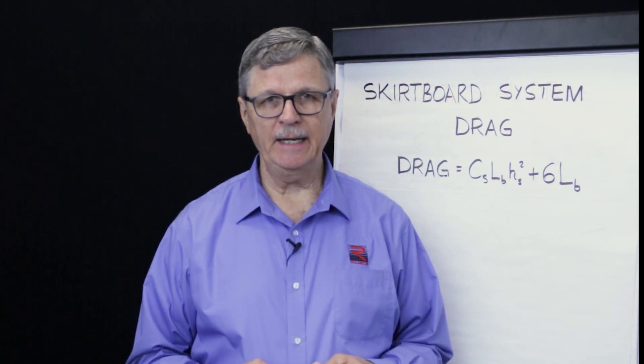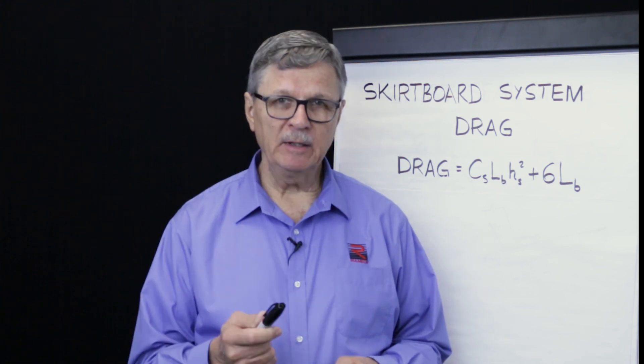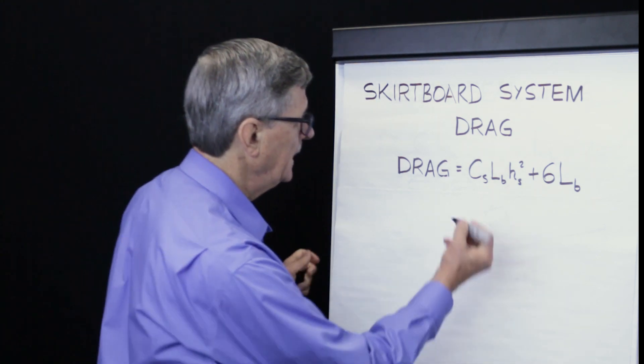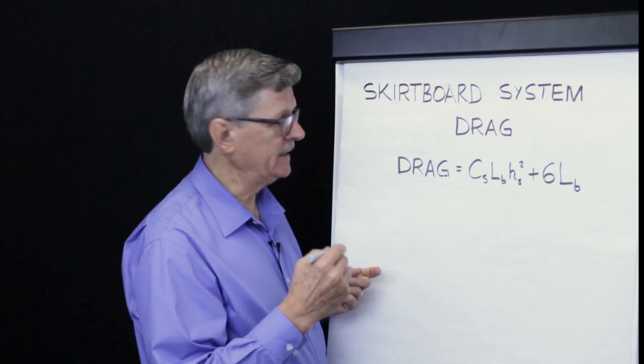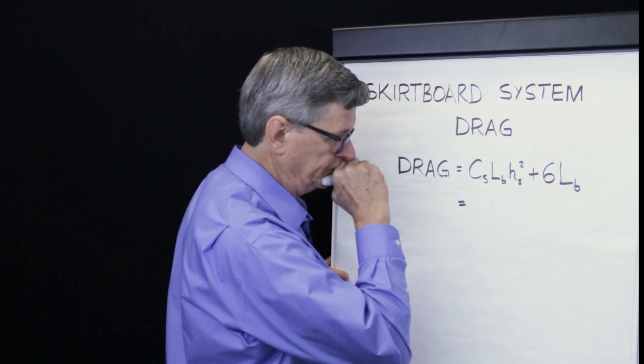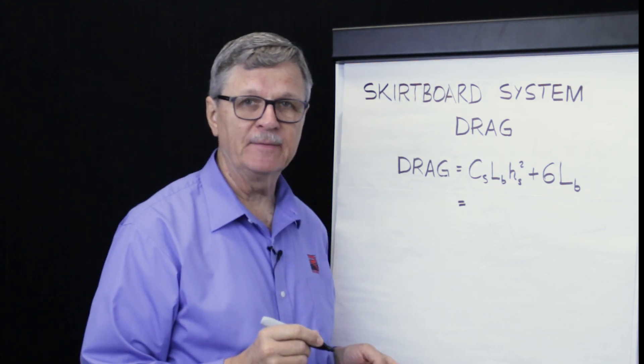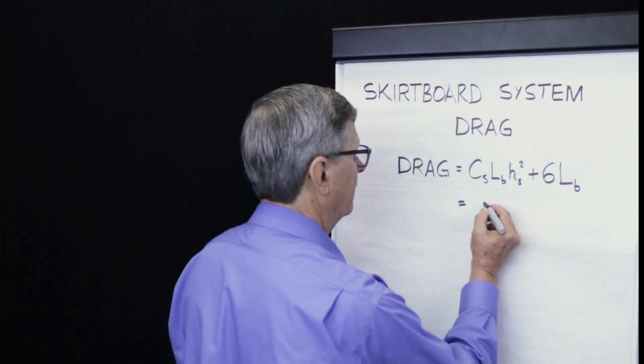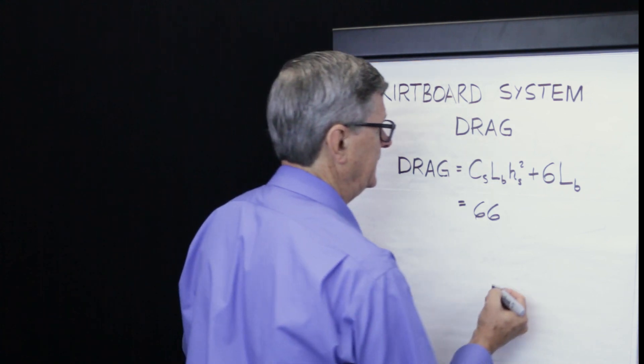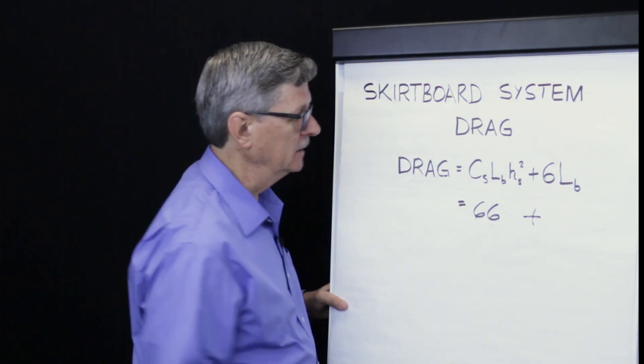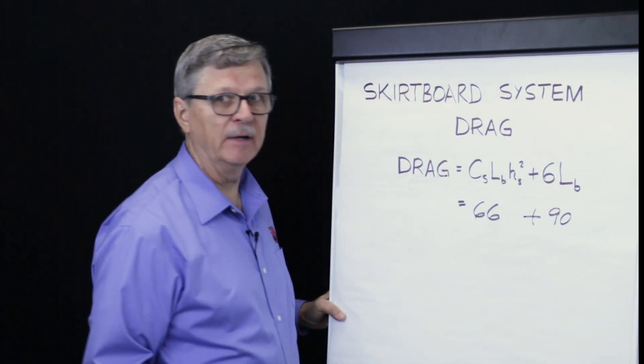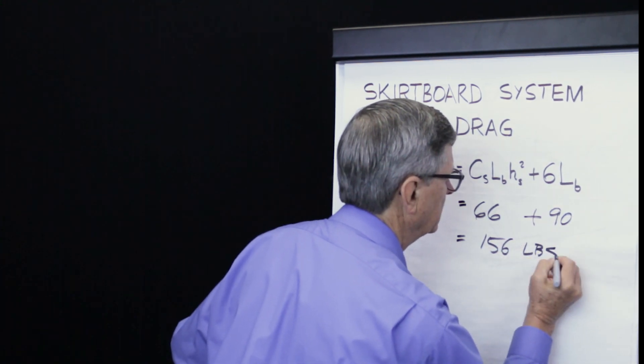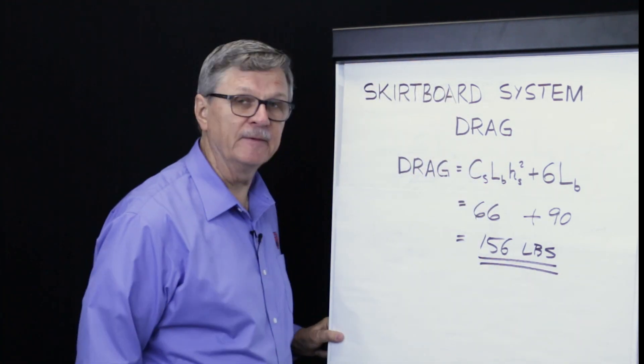Having calculated material friction drag and skirt seal system drag, we are now in a position to calculate total drag, and therefore the power required to overcome this friction. Remembering that we are thinking of an example of moving iron ore with a frictional coefficient of 0.276, with a skirt board length of 15 feet, and a material depth of 4 inches, we have a material frictional drag of 66 pounds, and a conventional rubber seal will yield a drag value of 90 pounds. Combining these frictions, we come up with a total drag value of 156 pounds.